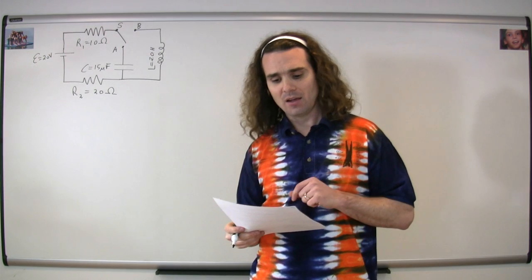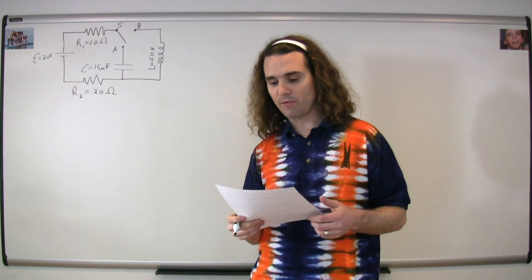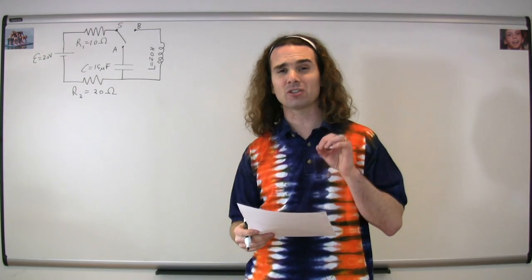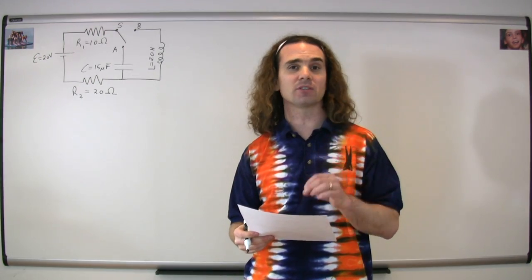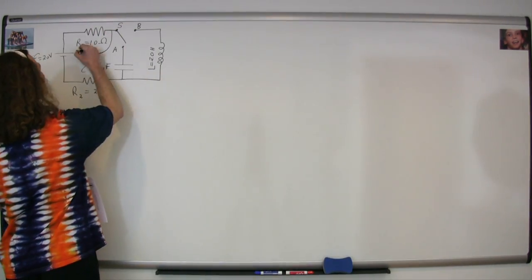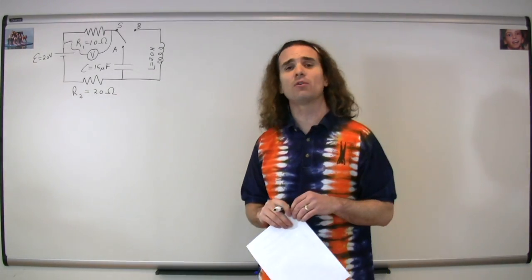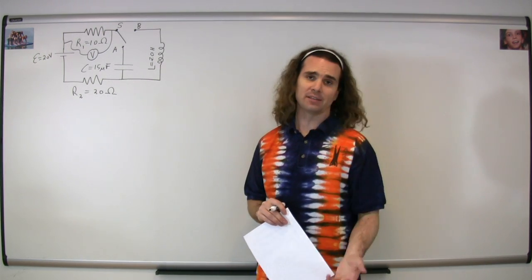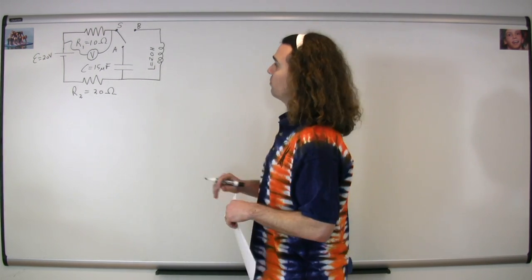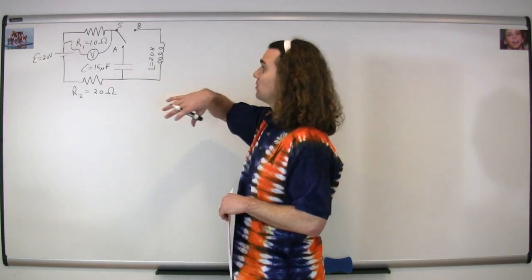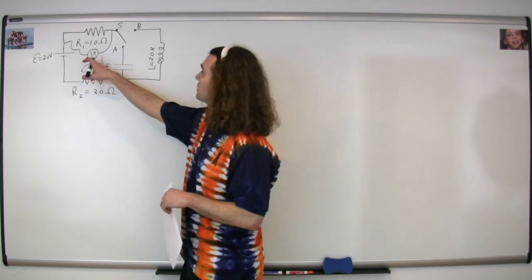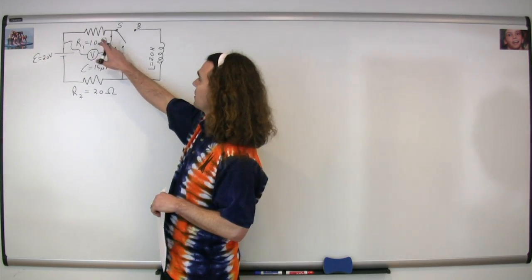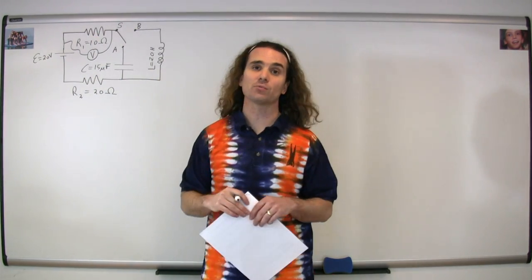For part A, it asks us to draw the voltmeter with the proper connections for correctly measuring the potential difference across resistor 1. As long as the voltmeter is in parallel with resistor 1 and only resistor 1, then it's correct. In other words, the voltmeter could go above or below — doesn't matter — as long as one side is between resistor 1 and the battery and the other side connects between resistor 1 and the switch.